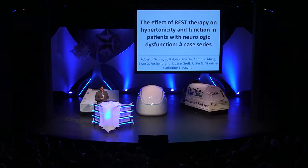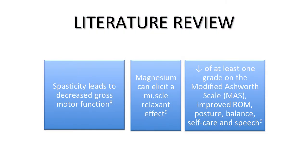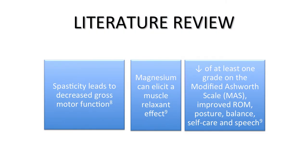So the literature review. So I had the idea. I said, well, I want to study the effects of rest or effects of flotation on hypertonicity. I know that magnesium sulfate can potentially reduce muscle tension. So I want to study this and I want to see what happens in the neurological population where somebody's not just tight from a tough day, but they're tight from Parkinson's disease or multiple sclerosis. So in doing our lit review, I kind of came to the conclusion that spasticity leads to a decreased movement, or hypertonicity. Magnesium can theoretically relax a muscle. And if I were to decrease that spasticity as rated on a certain scale, the modified Ashworth, then I could improve a person's range of motion, posture, balance, self-care, speech, and on and on.